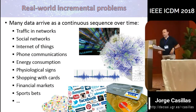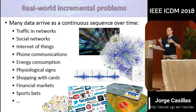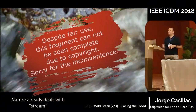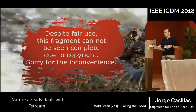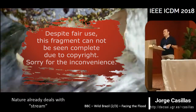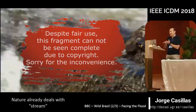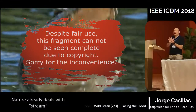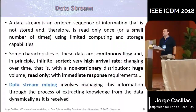There are many real-world incremental problems where data are coming continuously: traffic in networks, social networks, Internet of Things, phone communications, energy consumption, etc. Nature is wiser than us. Millions of years ago, this was already solved. For example, Jacaré Caimans in Brazil — after the dry season, when rain starts to fill the river, the caimans have very low energy. They just open their mouths and wait for fish to get inside. They take profit of the streaming, in this case the river. This is what we try to do with data stream mining.